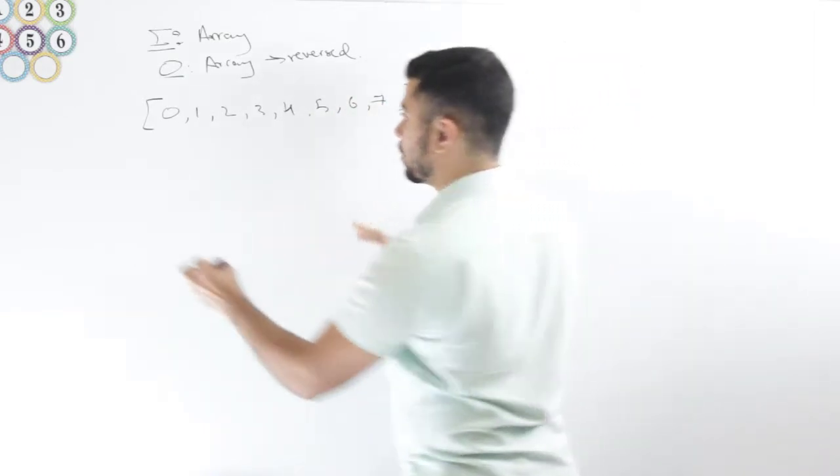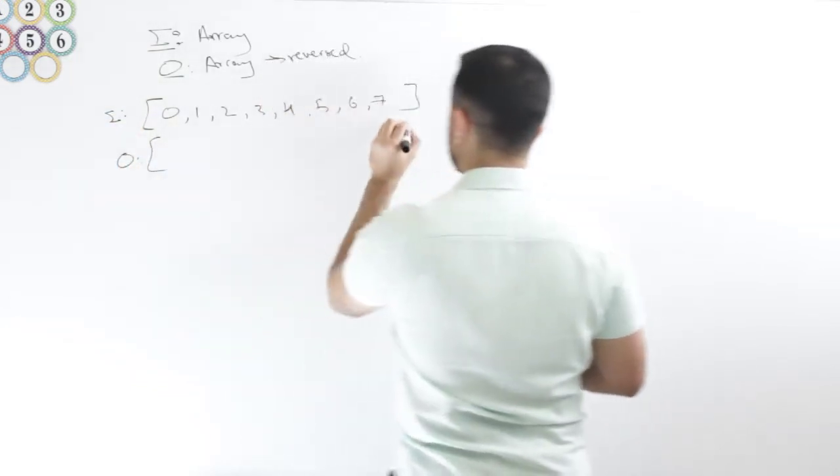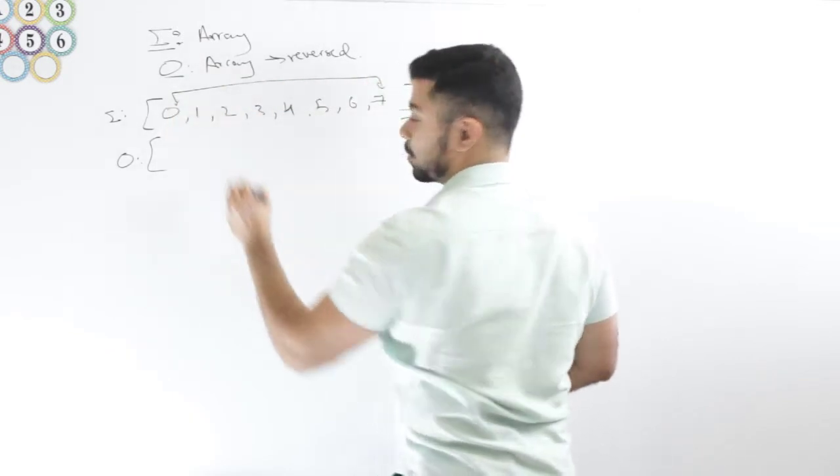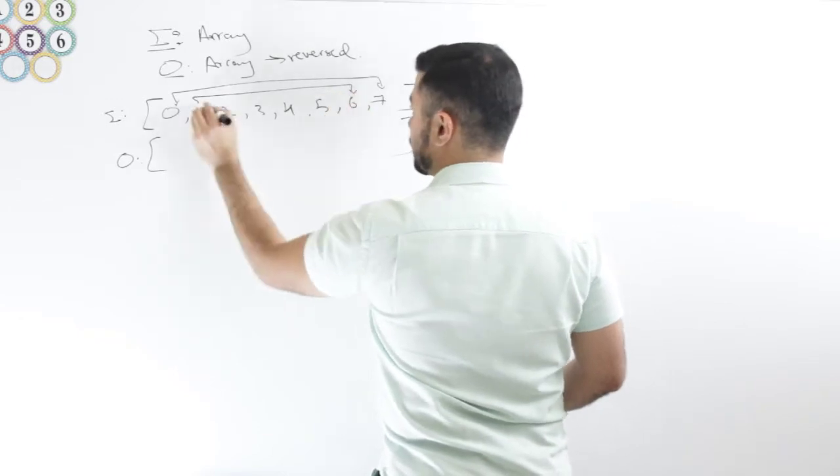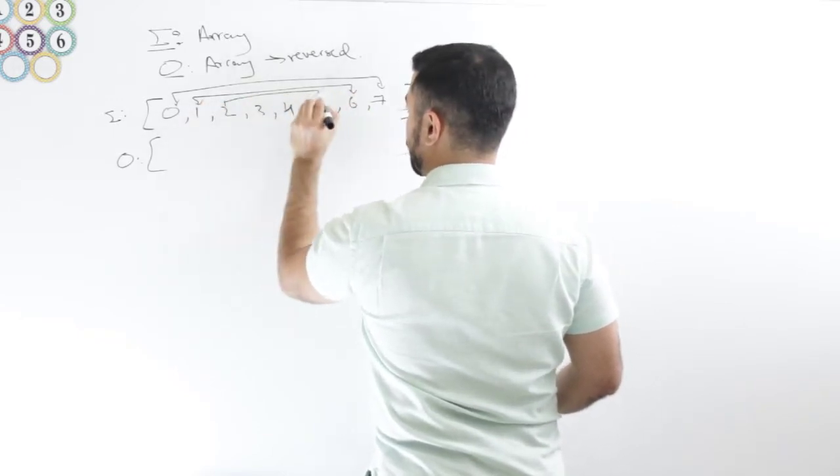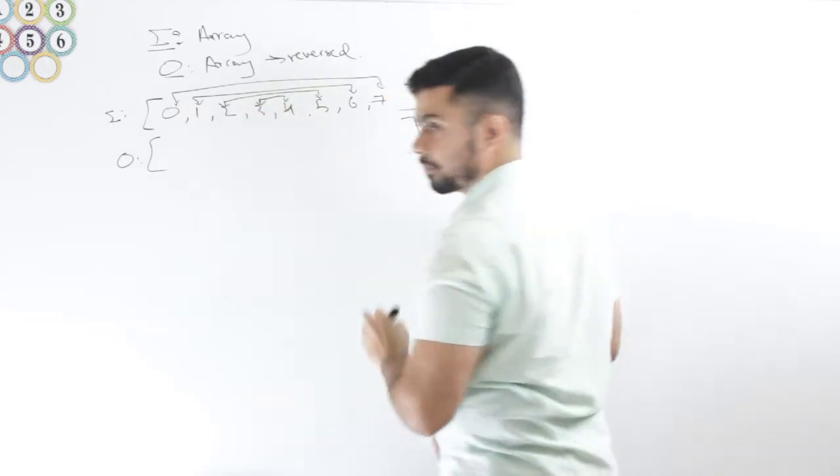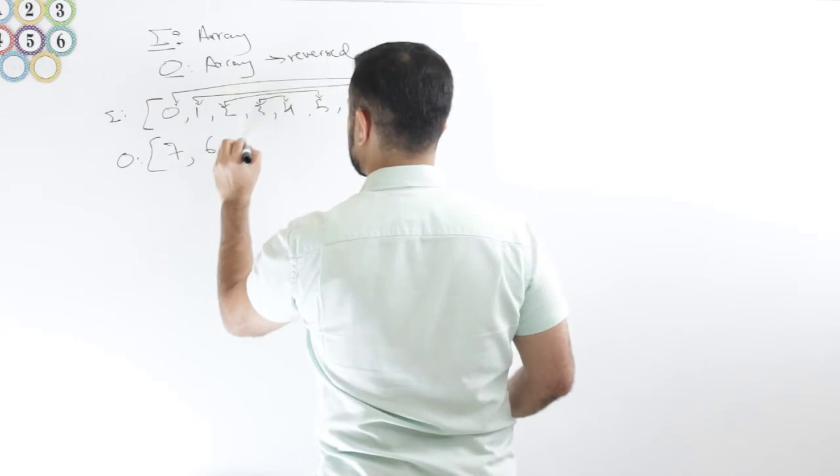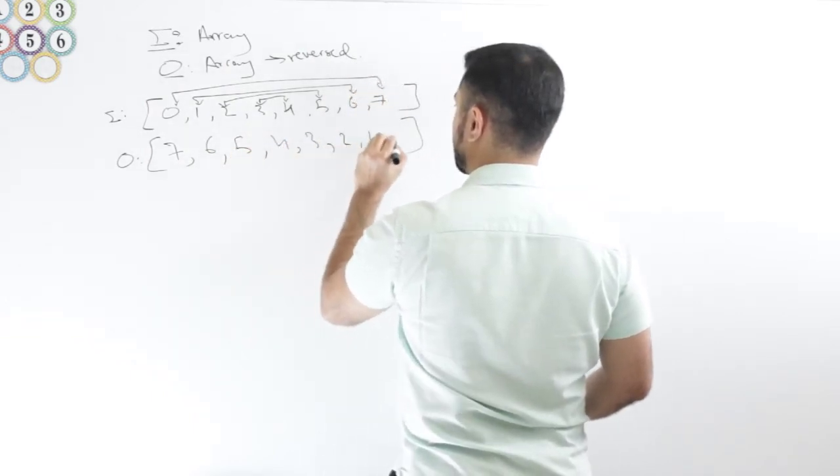The output, if this is the input, the output will basically be 0 swapped with 7, 1 swapped with 6, 2 swapped with 5, and 3 swapped with 4. Which will then yield 7, 6, 5, 4, 3, 2, 1, and 0.